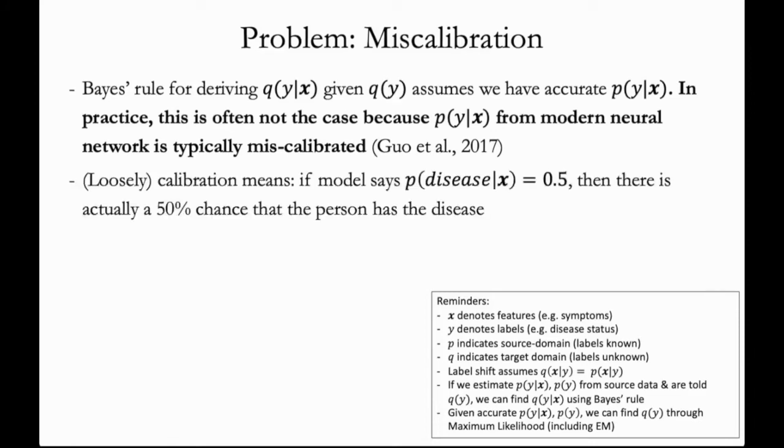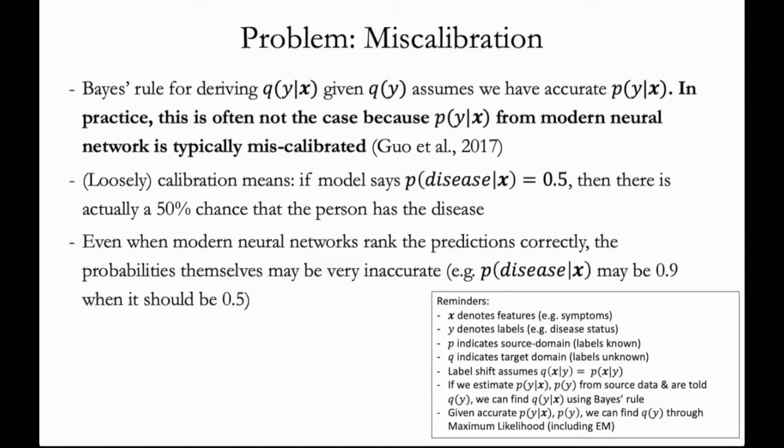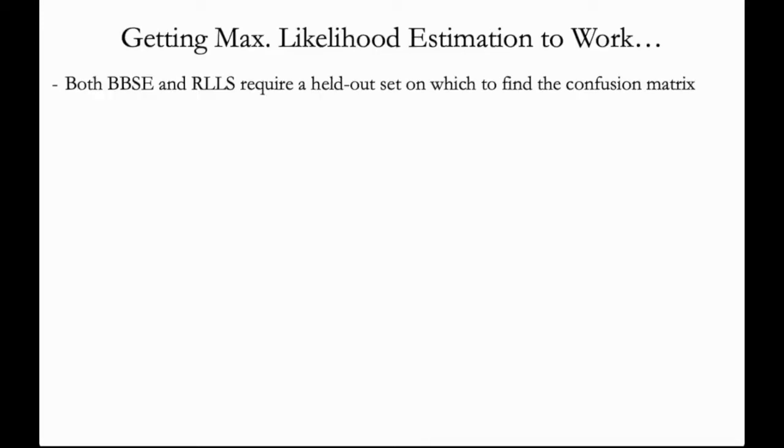Loosely speaking, calibration means that if the model predicts that the probability of a disease given symptoms is 0.5, then there's actually a 50% chance that the person has the disease. But even when neural networks can rank the predictions correctly, the probabilities themselves can be very inaccurate. For example, the model may predict that the probability of the disease given symptoms is 0.9, when in actuality it ought to be predicting 0.5. So how can we get maximum likelihood to work?